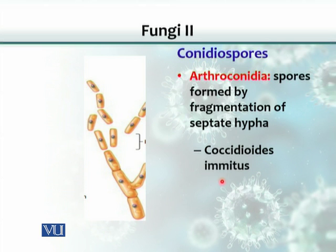Coccidioides immitis is an example of a fungus that produces arthroconidia.